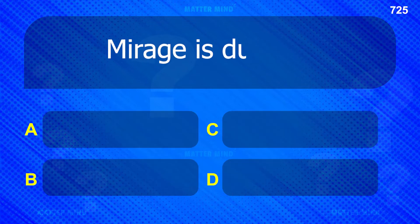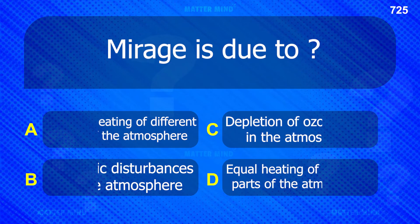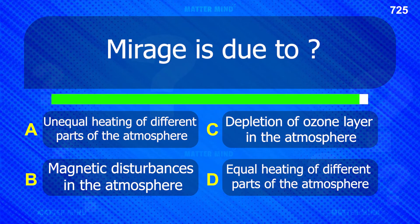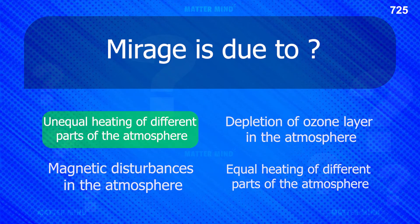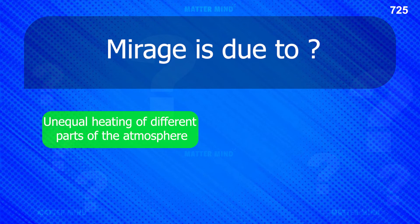Mirage is due to unequal heating of different parts of the atmosphere.